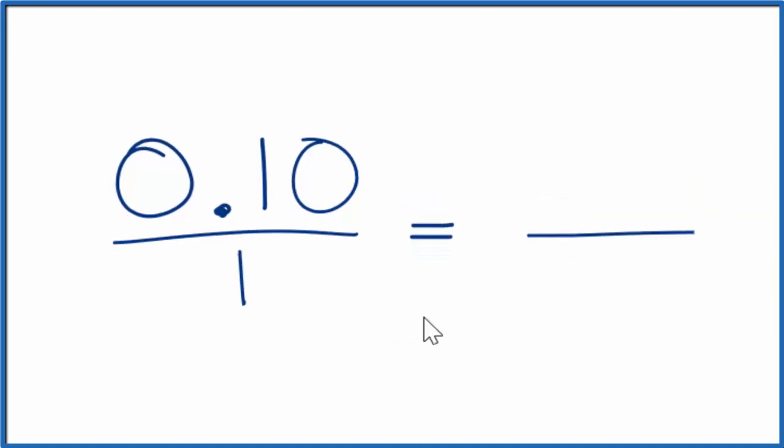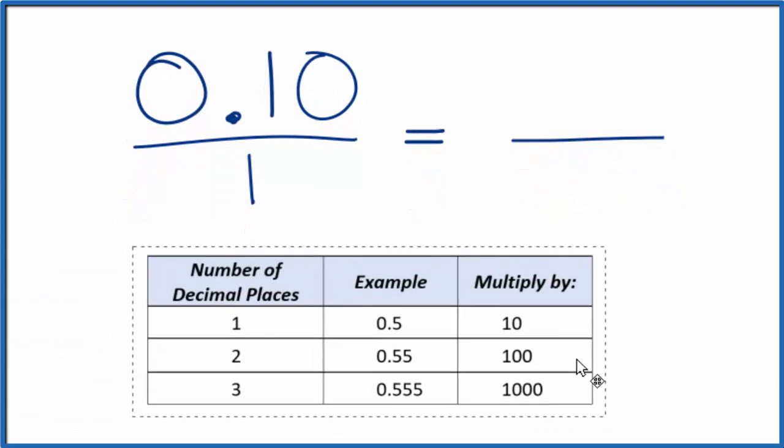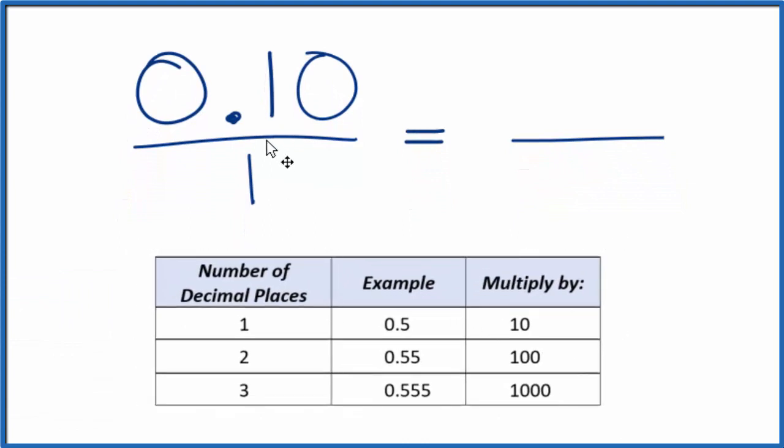So we want to get whole numbers. And one way we can do this is if we have two decimal places. So here we have one, two decimal places like 0.55 or 0.10. We can multiply by 100.